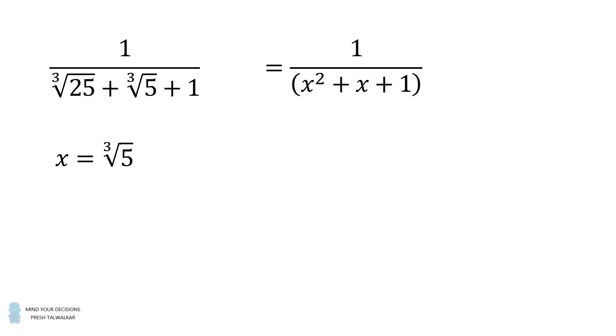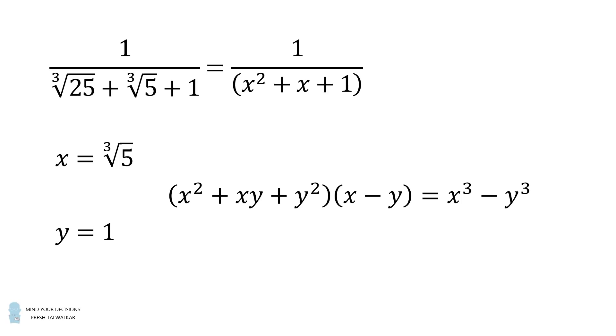Now, this factor in the denominator is reminiscent of the factor in the difference of cubes. Suppose y is equal to 1. One factor becomes x squared plus x plus 1, and the other factor is x minus 1. The product of these two factors is equal to x cubed minus 1. If we substitute x is equal to the cube root of 5, then x cubed is equal to 5. Then 5 minus 1 is equal to 4.